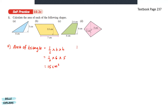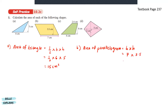For B, the area of a parallelogram is base times height. So that will give us 7 for the base and 3.5 for the height, so the area of the parallelogram is 24.5 cm squared.